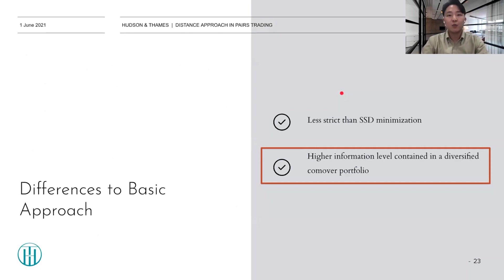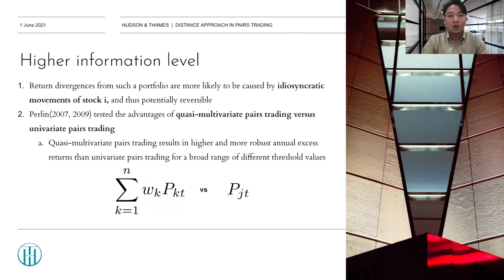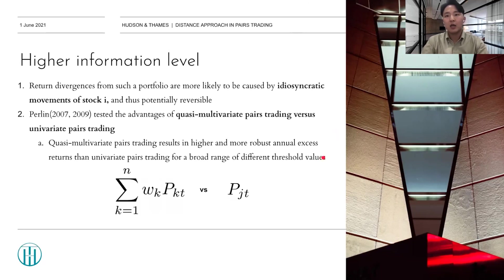Next is the higher information level contained in a diversified co-mover portfolio. Return divergence from such a portfolio is more likely to be caused by idiosyncratic movements of a stock and thus potentially reversible. Perlin tested in 2007 and 2009 the advantages of quasi-multivariate pairs trading versus univariate pairs trading. Since the Pearson correlation method uses a pairs portfolio as a co-mover benchmark for each stock, this quasi-multivariate pairs trading results in higher and more robust annual excess returns than univariate pairs trading across a broad range of threshold values.